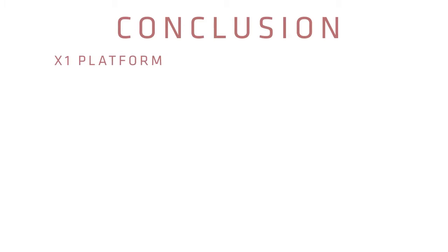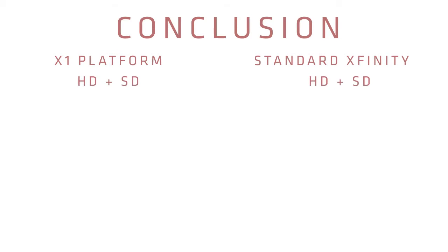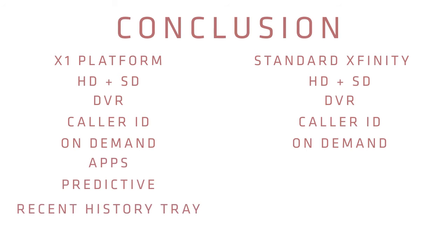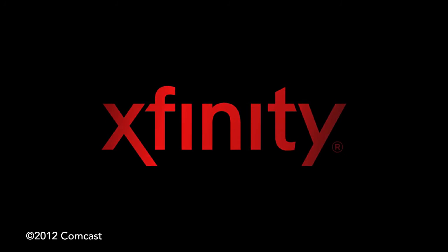Now that you know all about the X1 platform, let's wrap up by going over the primary differences between X1 and the standard Xfinity TV product. Both the X1 platform and the standard product have HD and SD capabilities. Both services offer the convenience of a DVR, caller ID on the TV, and access to on-demand. The X1 platform goes above and beyond with additional features not found in the standard product, including apps, predictive search, the recent history tray, and the X1 remote app. That's it for the product and the hardware — thanks for your time.